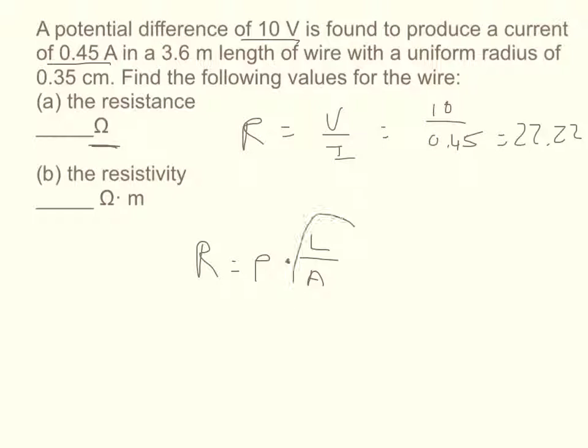We just have to make sure that our length divided by our area ends up being units of meters. So we'll solve for the resistivity first. That's going to be R times A cross-sectional area divided by length equals the resistivity.